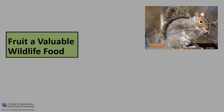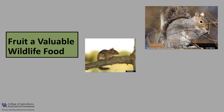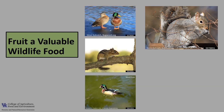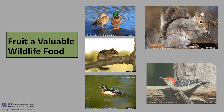Hickory serves as food for many wildlife species. The nuts are a preferred food of squirrels, which begin eating the nuts as they approach maturity in August until the supply is gone. Other mammals enjoy hickory nuts including chipmunks, black bear, gray and red fox, and rabbits. Several bird species eat hickory nuts as well, including mallards and wood ducks, bobwhite, crow, blue jay, white-breasted nuthatch, red-bellied woodpeckers, and yellow-bellied sapsuckers.